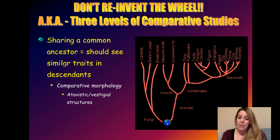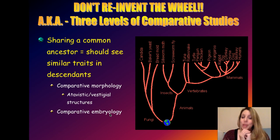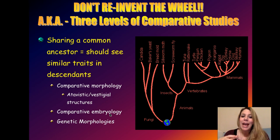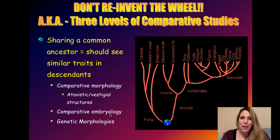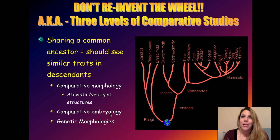You can trace the similarities among different groups and find out where the common ancestor that gave rise to those traits is. We're going to look at atavistic and vestigial structures, which are amazing. We're also going to look at comparative embryology — where studying embryos in different species shows how traits arrive from a common ancestor — and genetic morphology, where biotechnology now allows us to look at the genes, amino acids, and proteins and figure out where these things originated from.